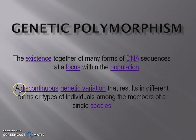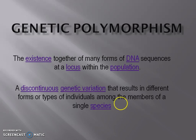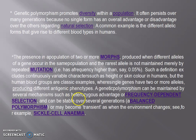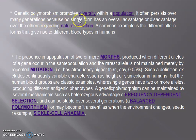The second point is a discontinuous genetic variation that results in different forms or types of individuals among members of a single species. Genetic polymorphism results in different forms or types of individuals among the members of the single species. It promotes diversity within a population, and it often persists over many generations because no single form has an overall advantage or disadvantage.